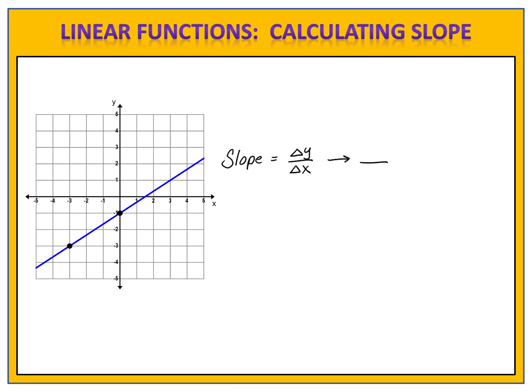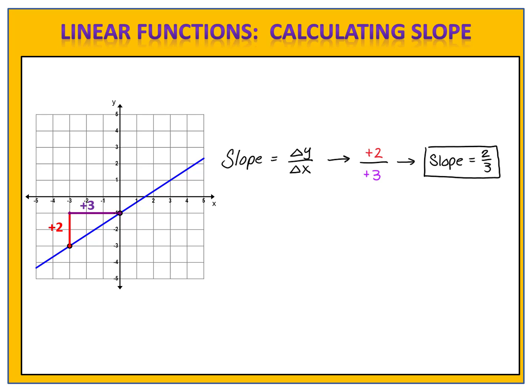We go from left to right on the graph and we look at what happened to the y values. The y value went up by two, so the change in y is plus two. And now we look for the change in x. The x value went up by three, so the change in x is plus three. Positive two over positive three is two-thirds. So the slope of this line is two-thirds.